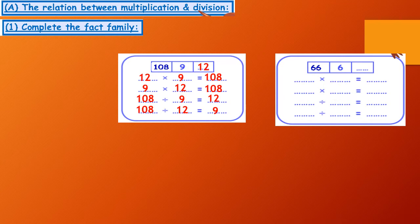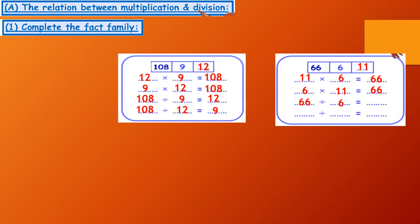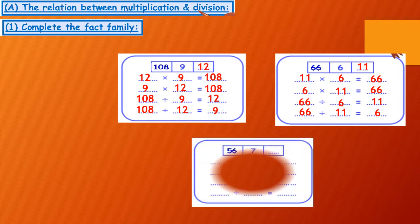66 divide 6 equals 11. So, 11 by 6 equals 66, 6 by 11 equals 66, 66 divide 6 equals 11, 66 divide 11 equals 6.